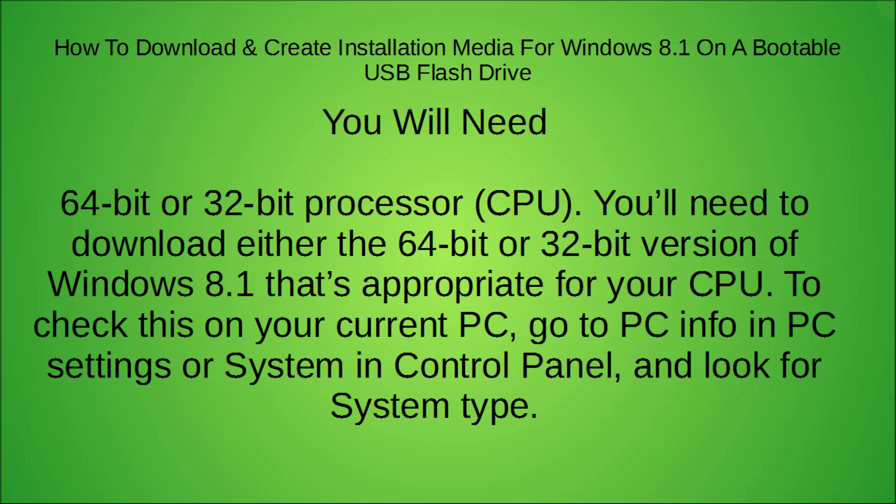You'll also need to know if you have a 64-bit or 32-bit processor, and you'll need to download the corresponding version of Windows 8.1. If you have a 64-bit CPU, get the 64-bit version; if not, get the 32-bit version. To check this on your current PC, go to PC Info in PC Settings or System in Control Panel and look for the system type.